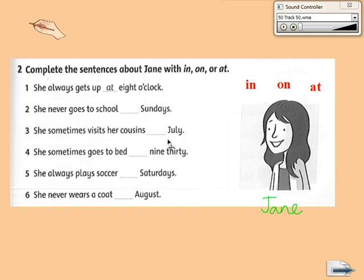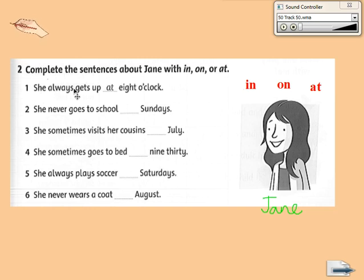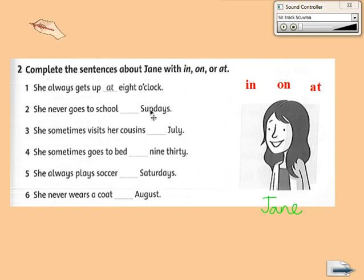Remember: 'in' is used before months and years, 'on' is used before days, and 'at' is used before times. So you just need to remember this to fill in correctly. Number 1 — she always gets up at 8 o'clock. Before a time, we use 'at'. Number 2 — we see the word Sundays, so we fill in 'on'.